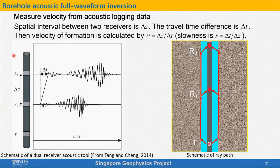Here I show a simple recording geometry with just two receivers. The spatial interval between the two receivers is delta Z. If the formation is homogeneous, we can see that the ray paths of the first arrived waves are along the wellbore, and the difference between the lengths of the ray paths is also delta Z. So if we want to know the velocity, we need to measure the time delay of the first arrived waves. Then the velocity could be calculated by delta Z over delta T. In the logging industry, usually people prefer to use slowness, which is the reciprocal of velocity.